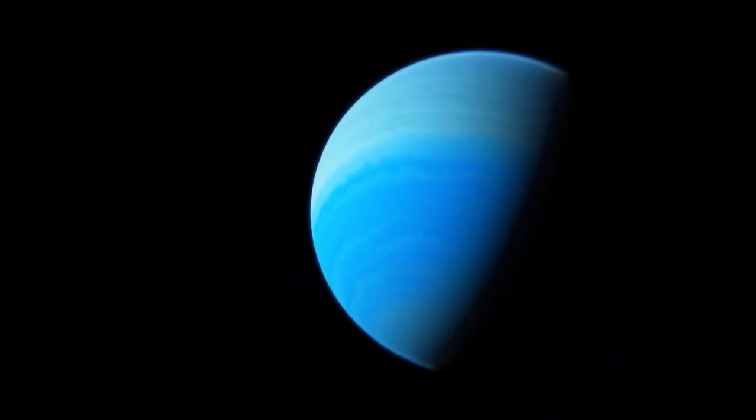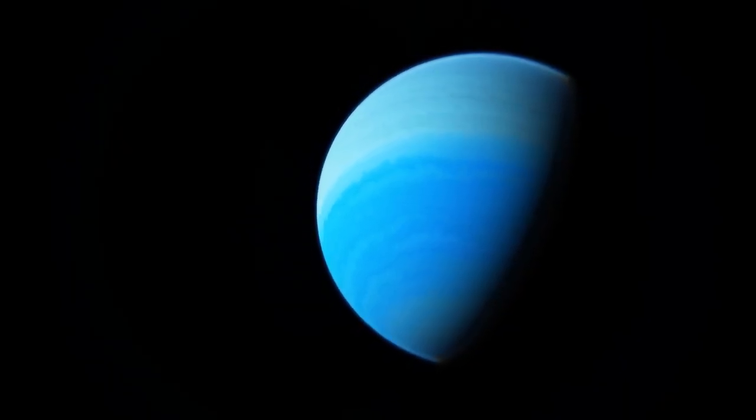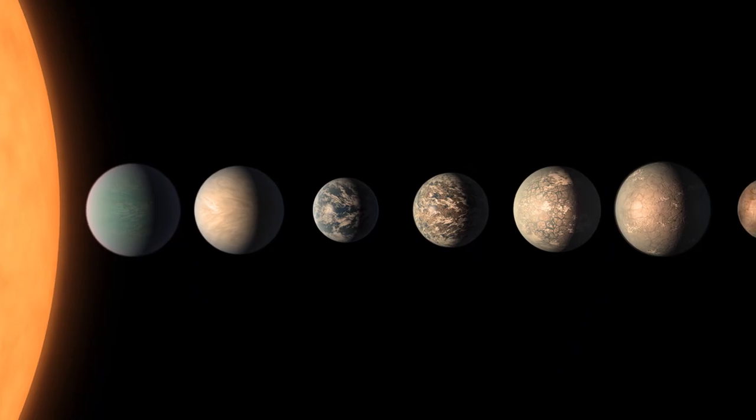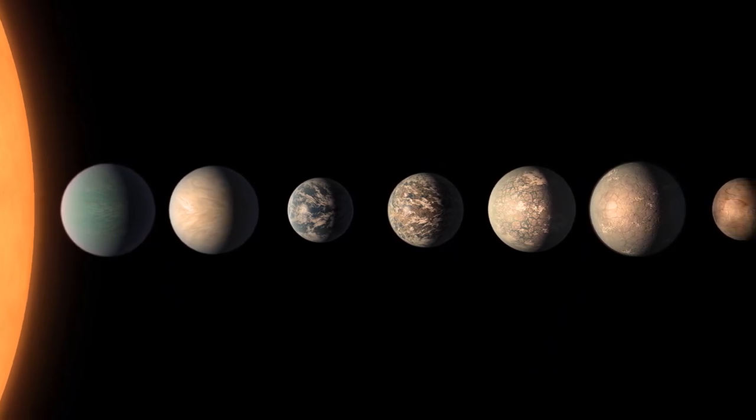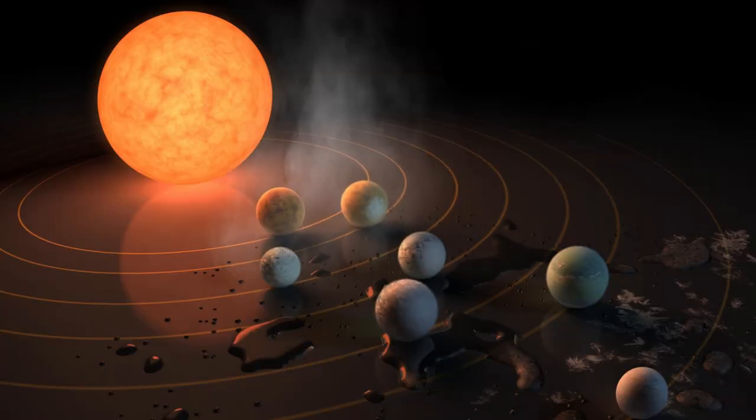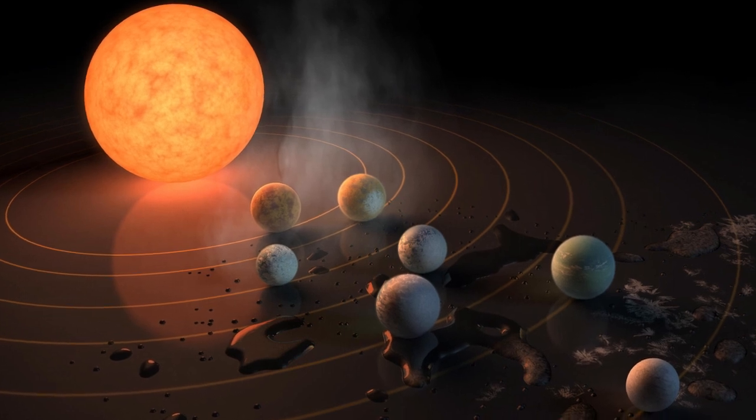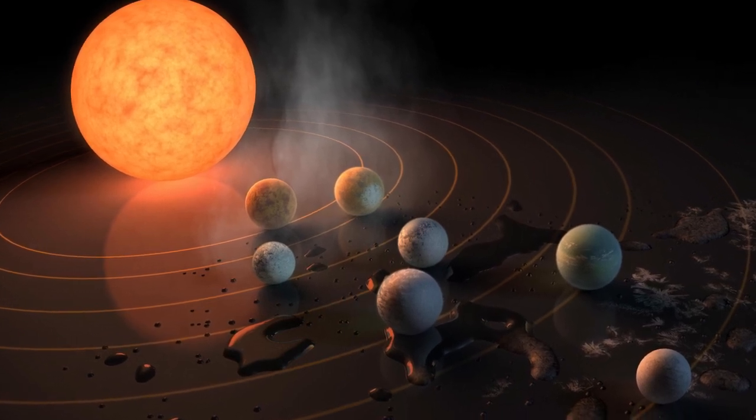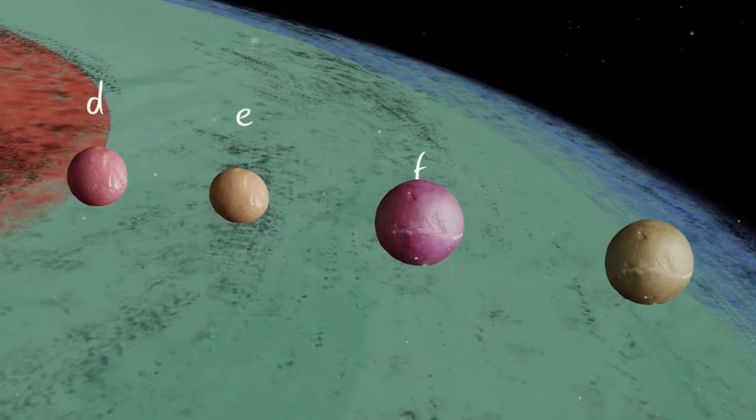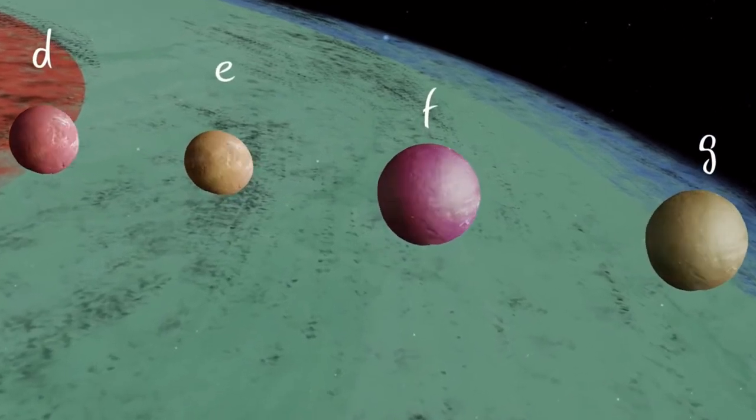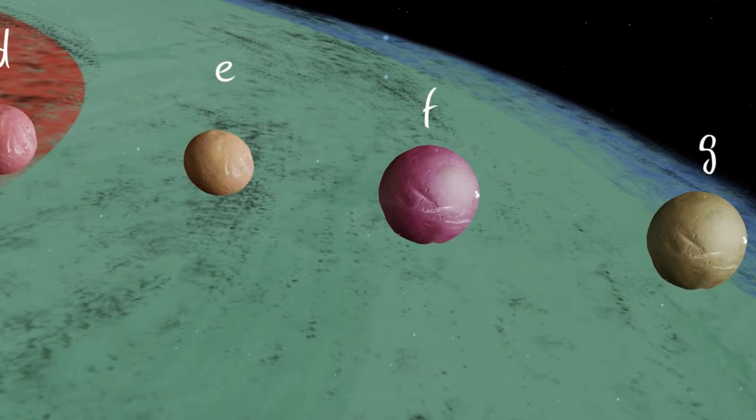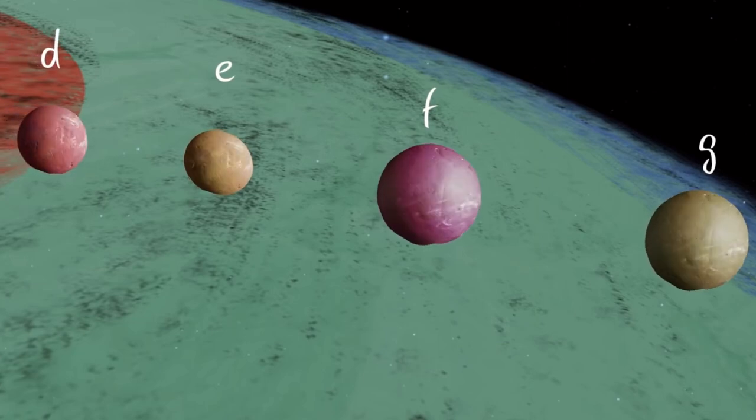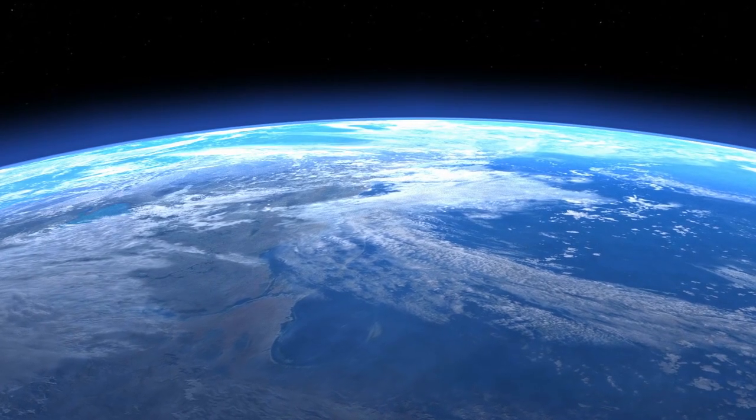The aforementioned findings of WASP-39b fit well for future research of the seven rocky planets in the Trappist-1 system, which orbits a red dwarf star 40.7 light-years from Earth. Four of these planets are in the star's so-called habitable zone, where temperatures are stable enough for liquid water to exist on the surface. Under the right conditions, these worlds may be habitable.